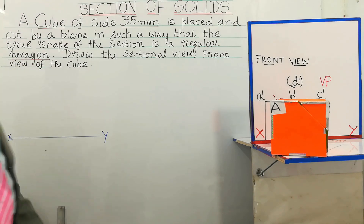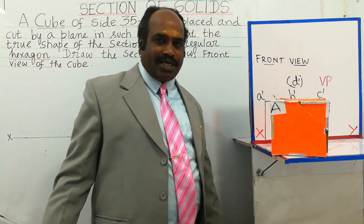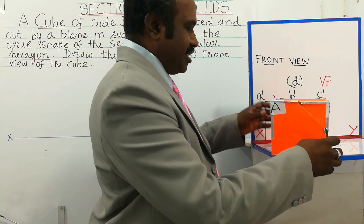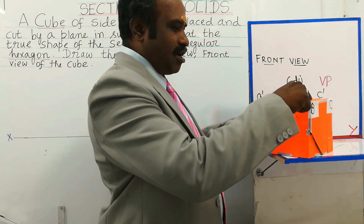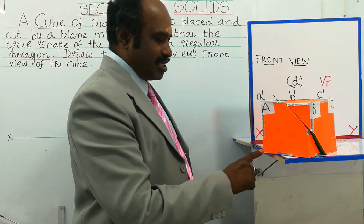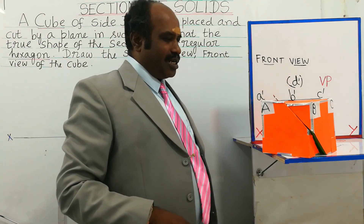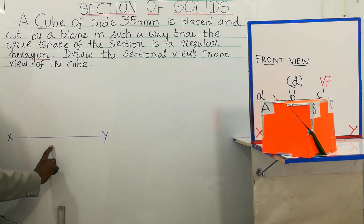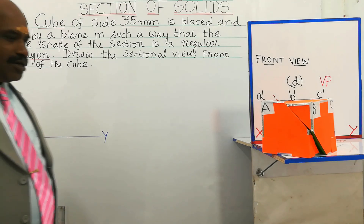In that way we have to cut — at what inclination if we cut the solid we get a hexagon shape in this cube, that we are going to see in this topic called section of solids. It has 8 corners. Top corners are marked as A, B, C and D. It also has 4 base corners, totally 8 corners. I am going to draw the simple position top view, front view, and sectional diagram. In the sectional diagram we are going to draw the hexagon shape.